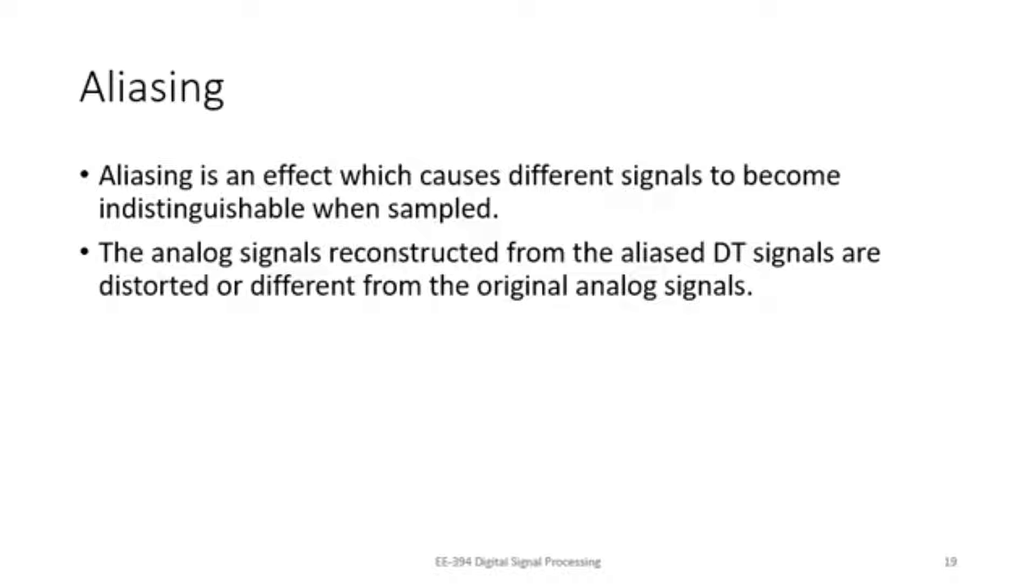We have seen this example that originally we had a signal of 50 hertz. We sampled it with a 40 hertz sampling rate and it came down to FD as 1 by 4. And if we go back and try to reconstruct the original signal, then we will not be getting back the 50 hertz signal. Rather, we will get back the 10 hertz signal because aliasing has occurred.